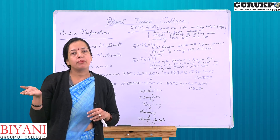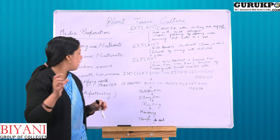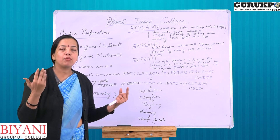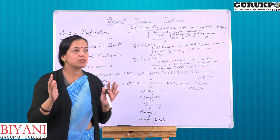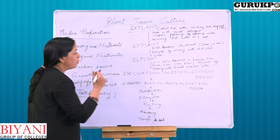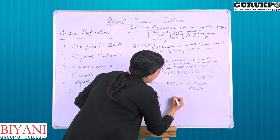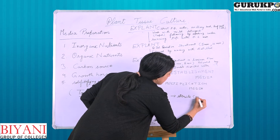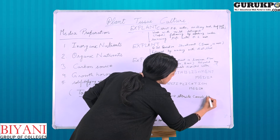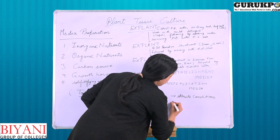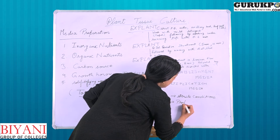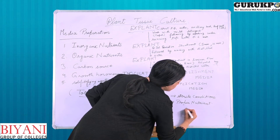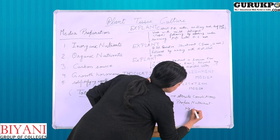As the embryonic cells have the ability to develop into a whole plant, so any cell must give rise to a whole plant if you provide them the proper conditions. For this we need two conditions: we have to provide them sterile conditions and proper nutrient media.